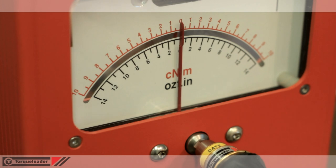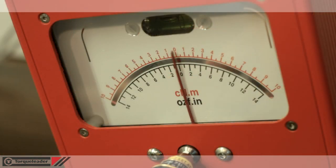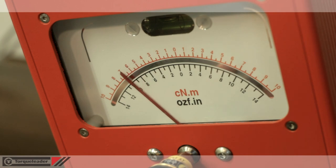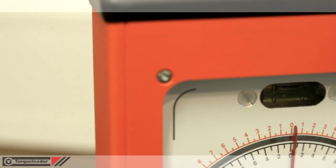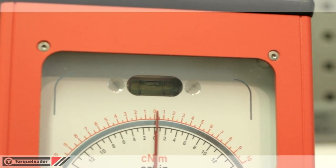The mirrored dial measures clockwise and anti-clockwise torque whilst keeping parallax errors to a minimum. The built-in spirit level ensures that the pendulum-based mechanism is mounted on a level surface.